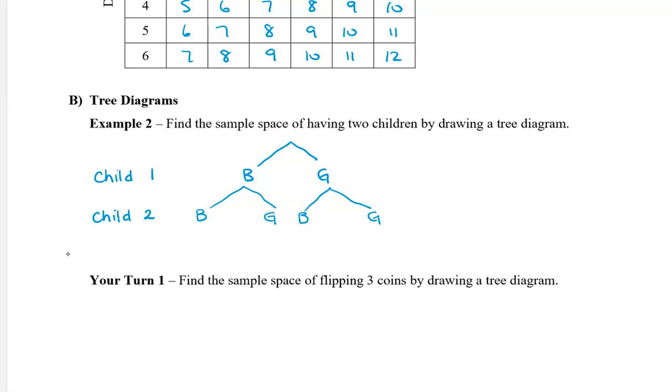So the sample space for listing the two children, we'll call it S for sample space, is we can have boy, boy. Or we can have the older one being a boy and the younger one being a girl. Or we can have the older one being a girl and the younger one being a boy. Or we can have two girls.